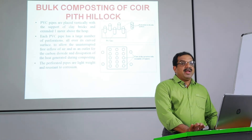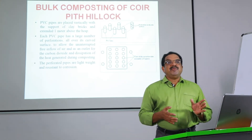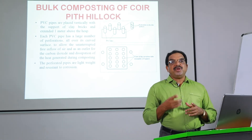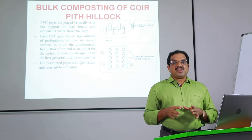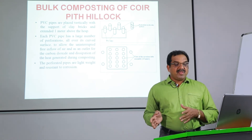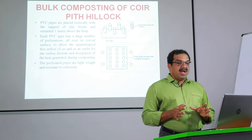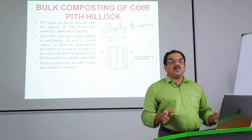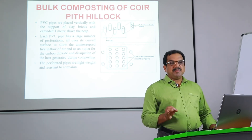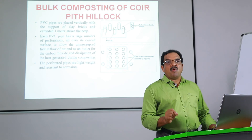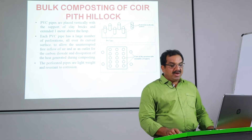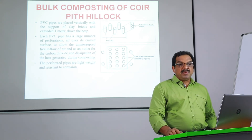This coir pith composting will take a minimum of 30 days — that means one month. Once you have started the process, every day you have to monitor the heap without disturbance from animals or other factors, and keep it at 200% moisture. After 30 days, the biodegraded material you obtain is organic manure. This is the conventional way of producing coir pith organic manure using Pith Plus and urea.